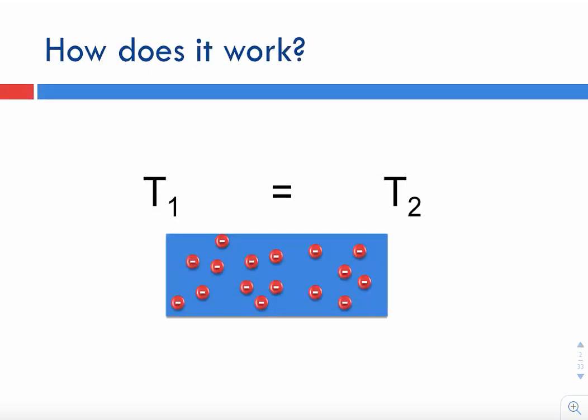Let's begin with this rectangular block of a semiconductor. When we start our experiment, this block is sitting at a uniform temperature. The two ends of this block are exactly at the same temperature — T1 is equal to T2. The electrons are uniformly distributed. Now we disturb this imbalance by providing heat from the left side of this block.